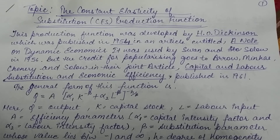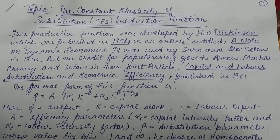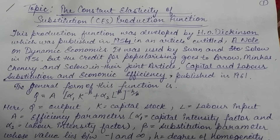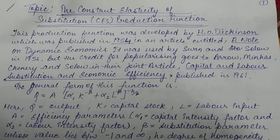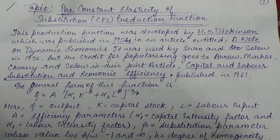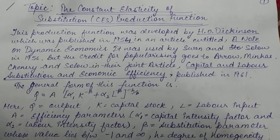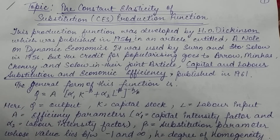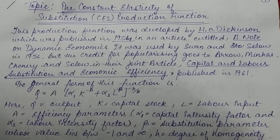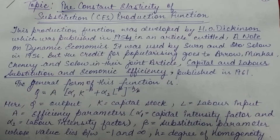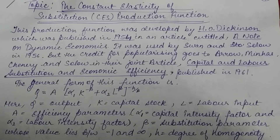The general form of this function is: Q, i.e. output, equals A times the bracket (alpha-1 times K to the power minus beta, plus alpha-2 times L to the power minus beta), the whole bracket raised to the power of minus H upon beta.